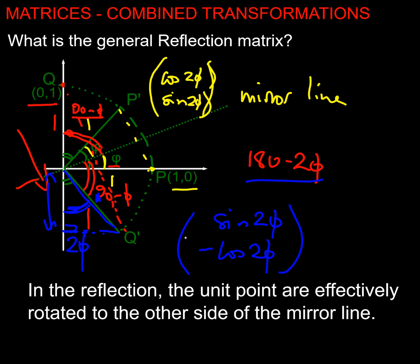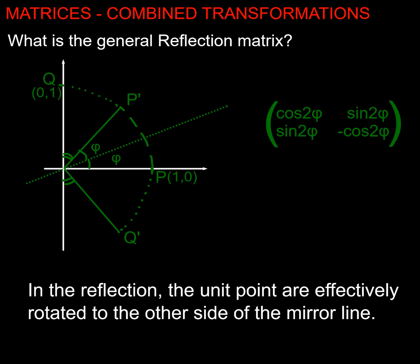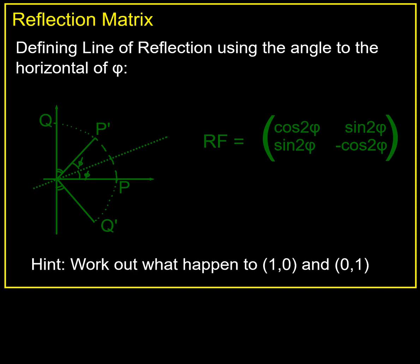So now I know where these points move to, I can combine them into a single matrix, can't I? I just want to rub out and make myself a little bit of space. So if I want to make the matrix for that, well, I need to know what happens to the (1,0) point. It goes to cos 2 phi, sine 2 phi. What happens to (0,1)? It goes to sine 2 phi, negative cos 2 phi. And there we have it. That's the general reflection matrix.